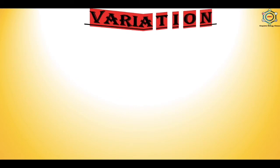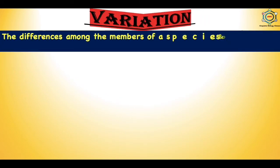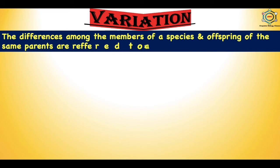First, we have to know what is variation. The differences among the members of a species and offspring of the same parents are referred to as variation. Any differences between the cells, individual organisms, or groups of organisms of any species caused either by genetic differences or by the effect of environmental factors on the expression of genetic potentials are variation. Variation arises from mutation and is described as diversity in the genetic makeup of a species.